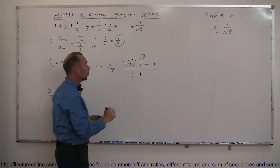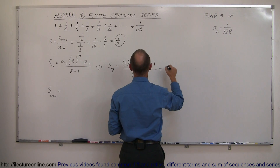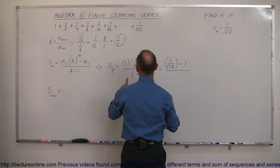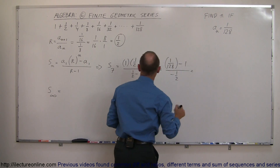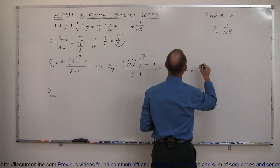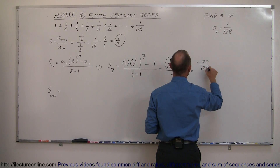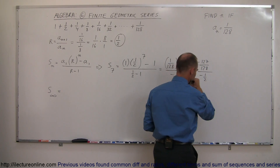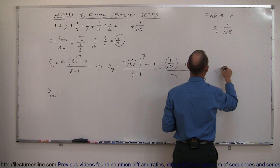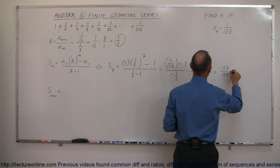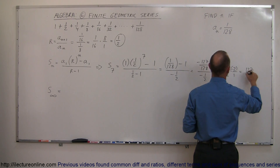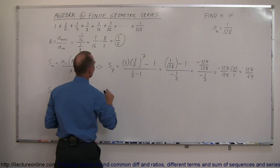Working that out: 1/2 to the 7th power equals 1/128. So we have 1/128 minus 1, all divided by 1/2 minus 1, which is negative 1/2. Now 1/128 minus 1 equals negative 127/128. So we have negative 127/128 divided by negative 1/2 — the negatives cancel — and dividing by a fraction is the same as multiplying by its inverse, giving us 127/128 times 2/1, which equals 127/64.